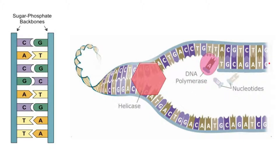Next, DNA polymerase moves along one of the exposed strands, known as the template strand. As it moves along, free-floating nucleotides present in the nucleoplasm diffuse around and are attracted to the exposed bases on the template strand. For example, wherever there is an exposed T, a nucleotide with an adenine base will be attracted to it. These free-floating nucleotides randomly collide with the correct exposed base.